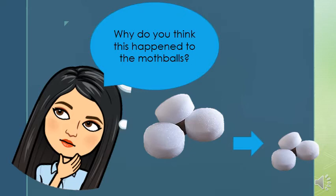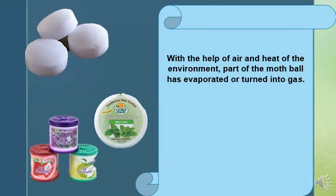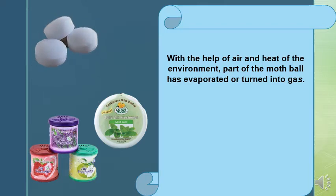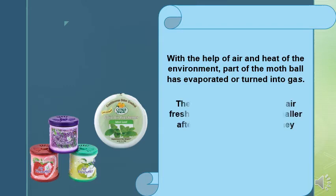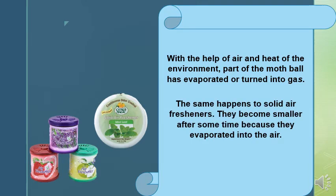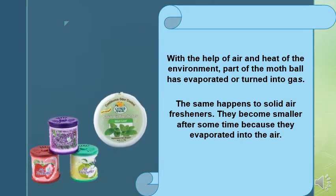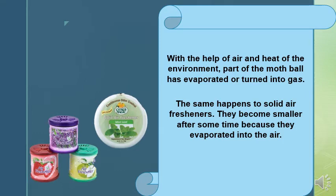Why do you think this happened to the moth balls? With the help of air and heat of the environment, part of the moth balls has evaporated or turned into gas. The same happens to solid air fresheners — they become smaller after some time because they evaporated into the air. These are examples of solid air fresheners.